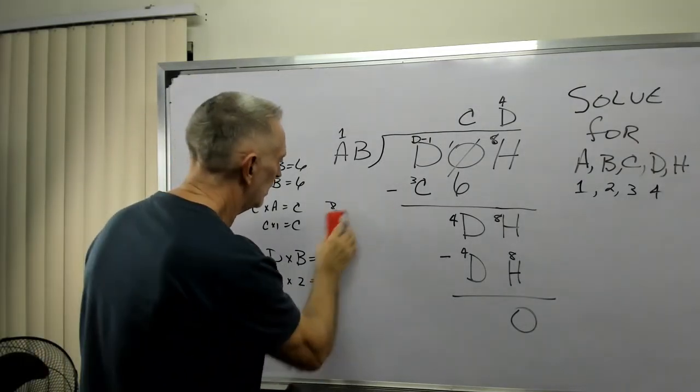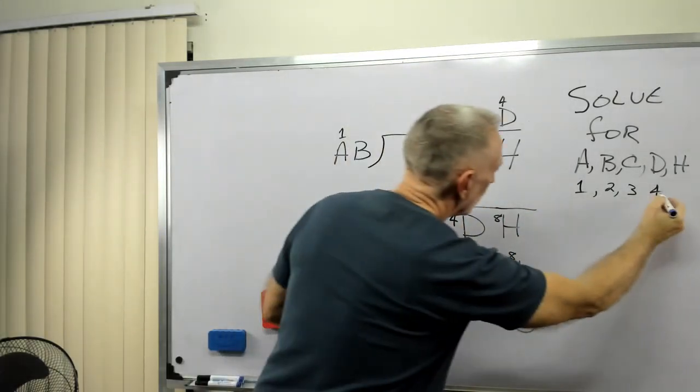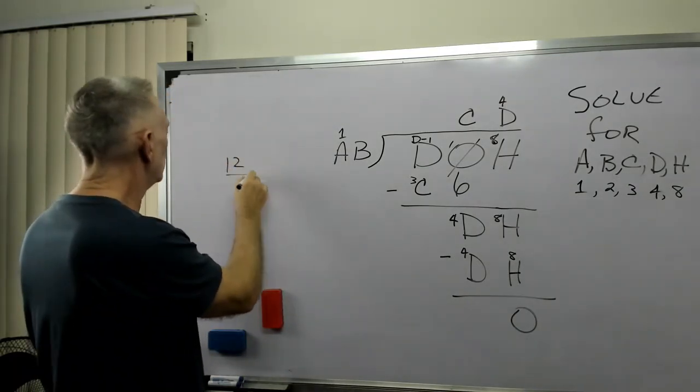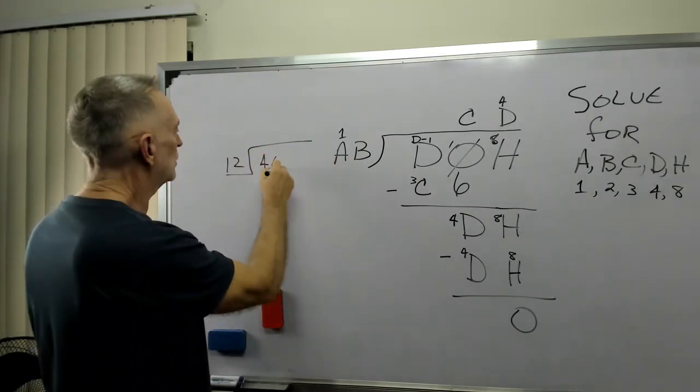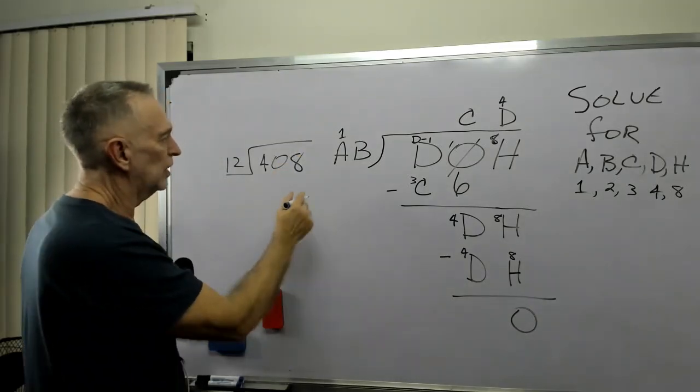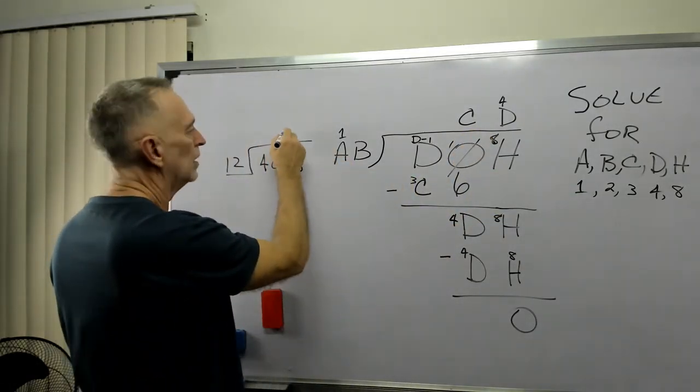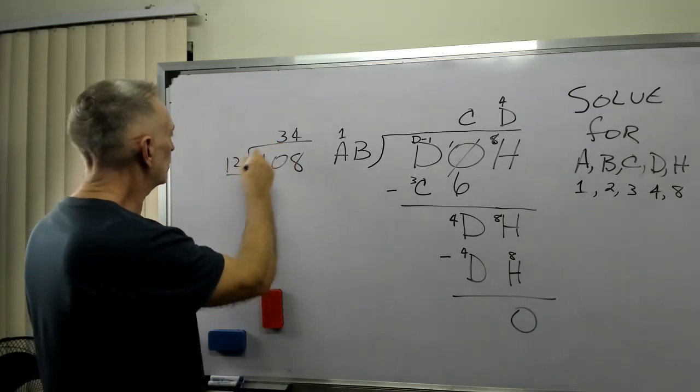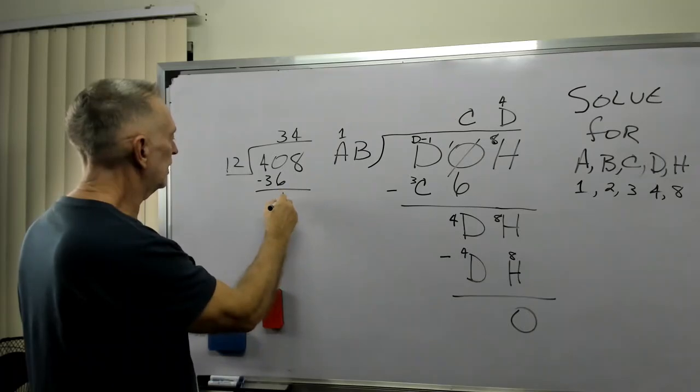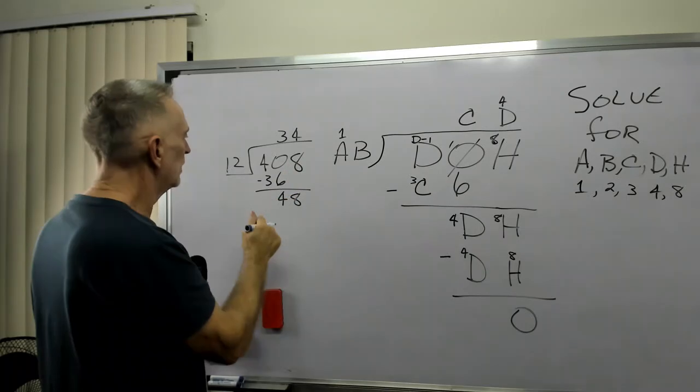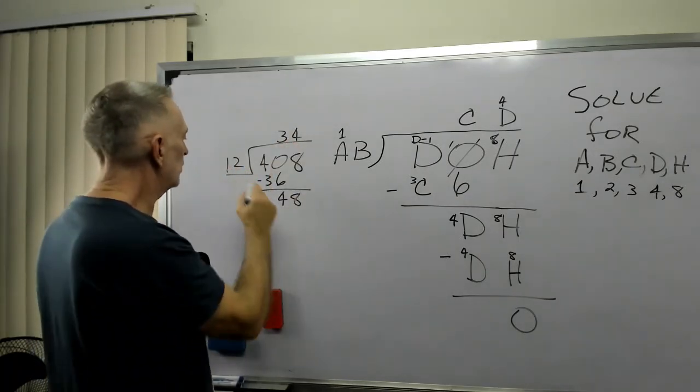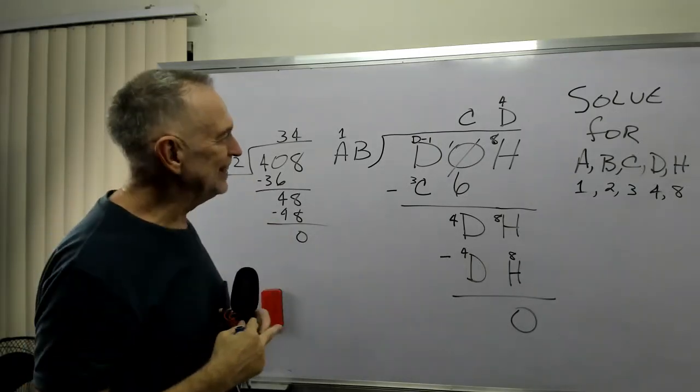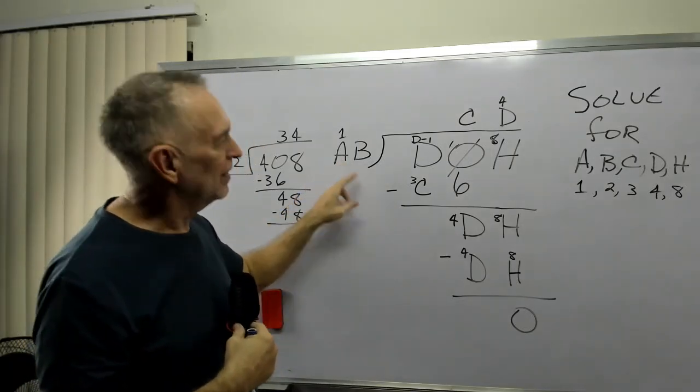Now then, let's rewrite that and see if we can make it all work out. So we have AB, so we have 12 divided into D, which was 4, 0, H, which was 8. And that's supposed to equal C, which was 3, 34. 3 times 12 is 36, so 3 times 2 is 6, 3 times 1 is 3. Subtract that, it gives me 48. Then 4 times 2 is 8, 4 times 1 is 4. 48 minus 48 is 0. So D0H divided by AB equals CD.